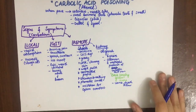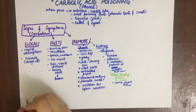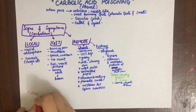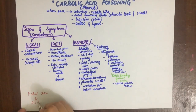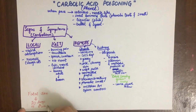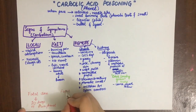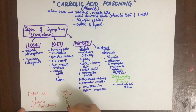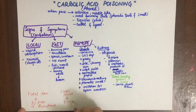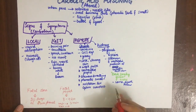Regarding the fatal dose and fatal period: the fatal dose of carbolic acid is about 20 drops of pure phenol, and probably twice that quantity of most carbolic acid disinfectants. The fatal period is about three to four hours. The minimum recorded is three minutes and the maximum is 60 hours.